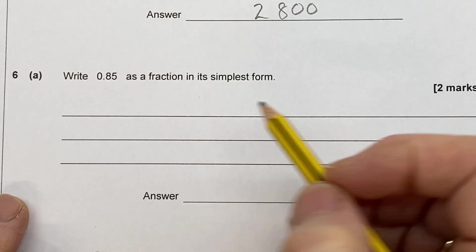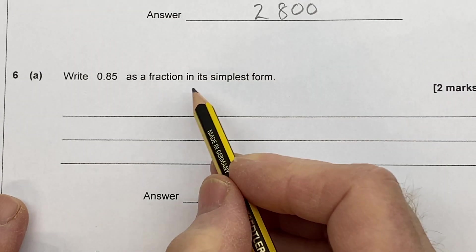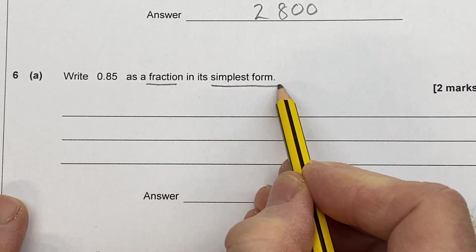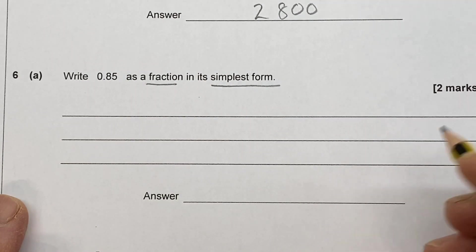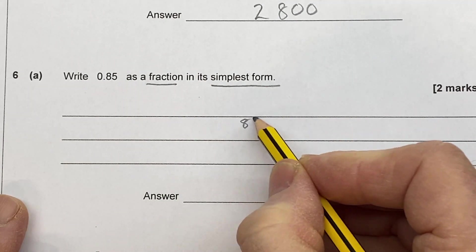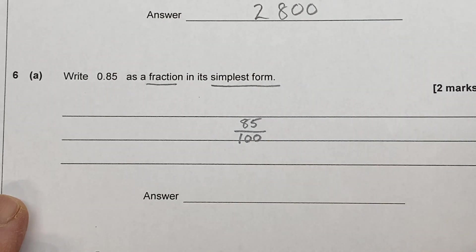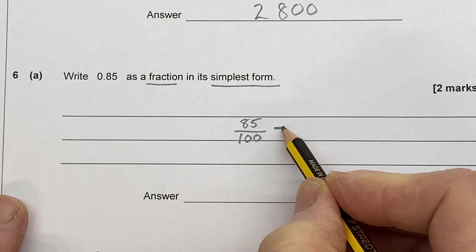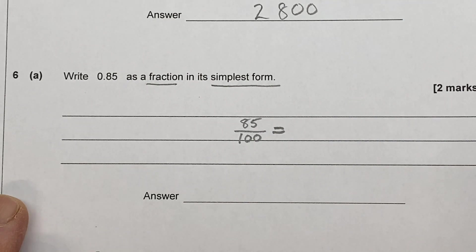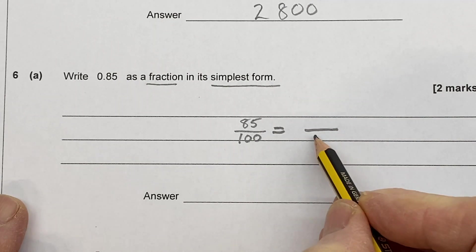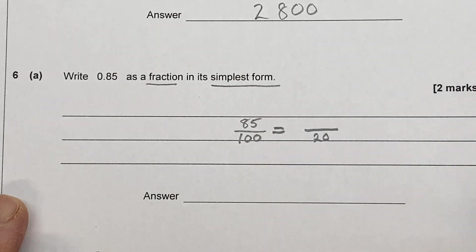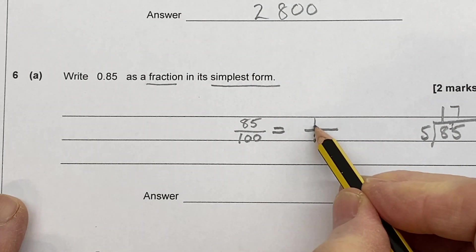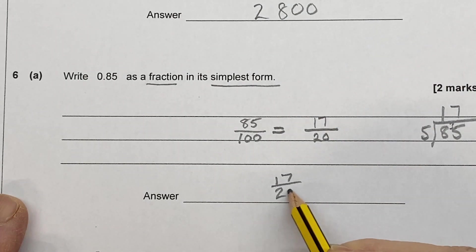Question six. Write 0.85 as a fraction in its simplest form. So a fraction but the simplest form. Well 0.85 I hope you know is 85 over 100. And we want to simplify that. Both of those we can see are multiples of 5. Now I guess you know that 5 twenties make 100. So we want to know how many 5s there are in 85. You could do a little short division. 5 into 8 goes 1. There's 3 left over. 5 into 35 goes 7. So we've got 17 over 20. And that is the answer.